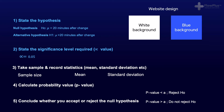The next step is to actually take a sample from the viewers of the blue background and calculate the statistics. This includes things like the sample size, the mean, and the standard deviation. The next step is to calculate the p-value, p standing for probability value. This is the probability that we get a statistic at least this far from the mean, if we assume the null hypothesis is true. If the probability value is less than the significance level, then we have evidence to reject the null hypothesis and have evidence for the alternative hypothesis. If, however, the p-value is greater than or equal to the significance level, then we cannot reject the null hypothesis, i.e. we do not have enough evidence to reject it.